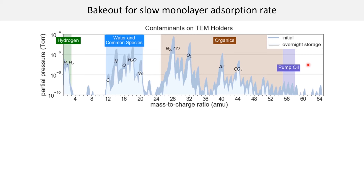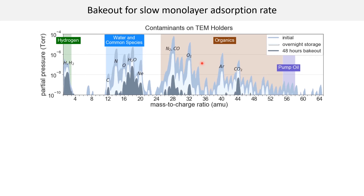Just now, we showed that residual gas level is lowered by 1 to 2 orders of magnitude with all-night high vacuum storage. Now, by baking the holders for 48 hours at 130 degrees Celsius, residual gas level is lowered by a total of 4 orders of magnitude down from ambient storage. It is worth noting that above 35 AMU, the heavier species and pump oil are effectively removed, or below the detectable limit of 10⁻¹⁰ torr.